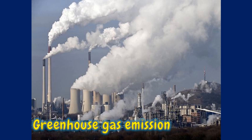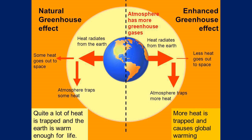A greenhouse gas is a gas that absorbs and emits radiant energy within the thermal infrared range, causing the greenhouse effect. The primary greenhouse gases in Earth's atmosphere are water vapor, carbon dioxide, methane, nitrous oxide, and ozone. The lower atmosphere is likely to warm, changing weather and climate. The enhanced greenhouse effect is additional to the natural greenhouse effect and is due to human activity changing the makeup of the atmosphere. The enhanced greenhouse effect is often referred to as global warming.